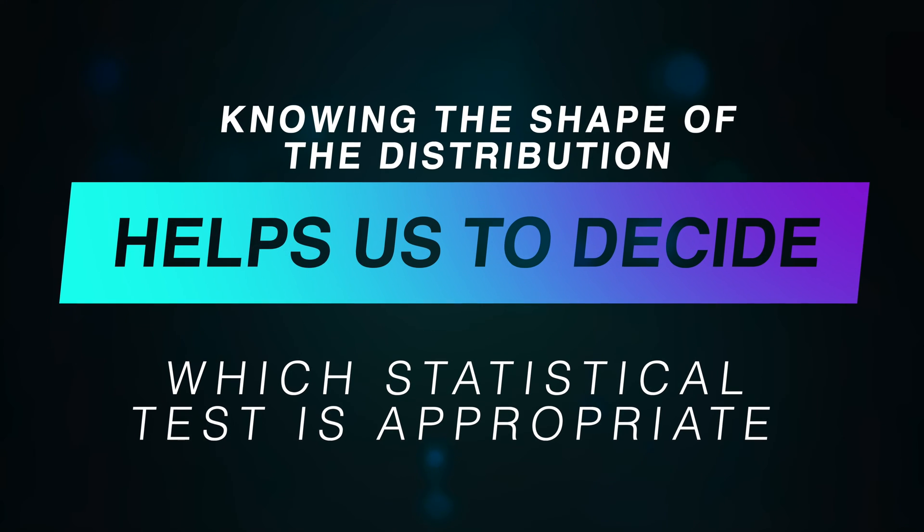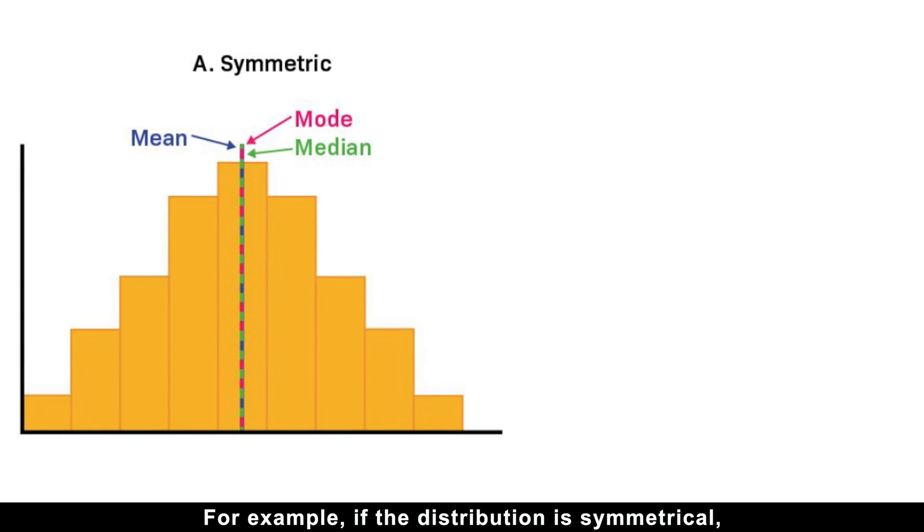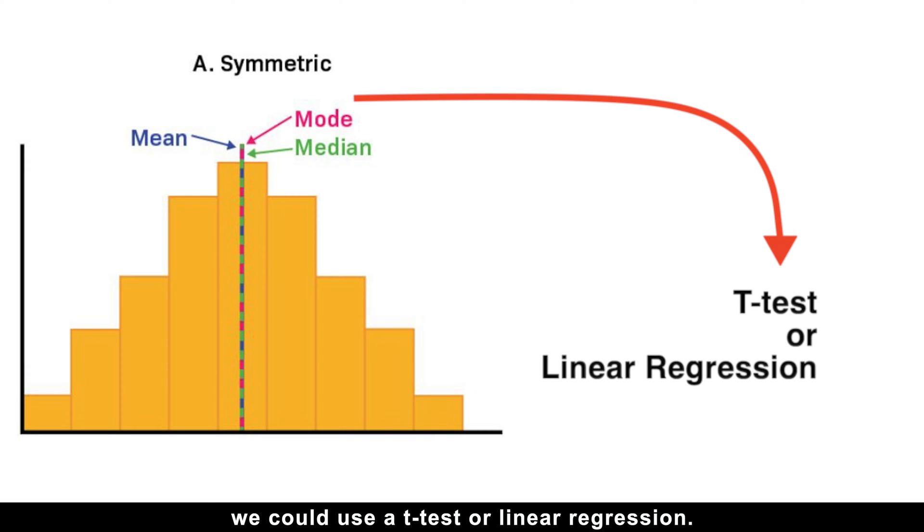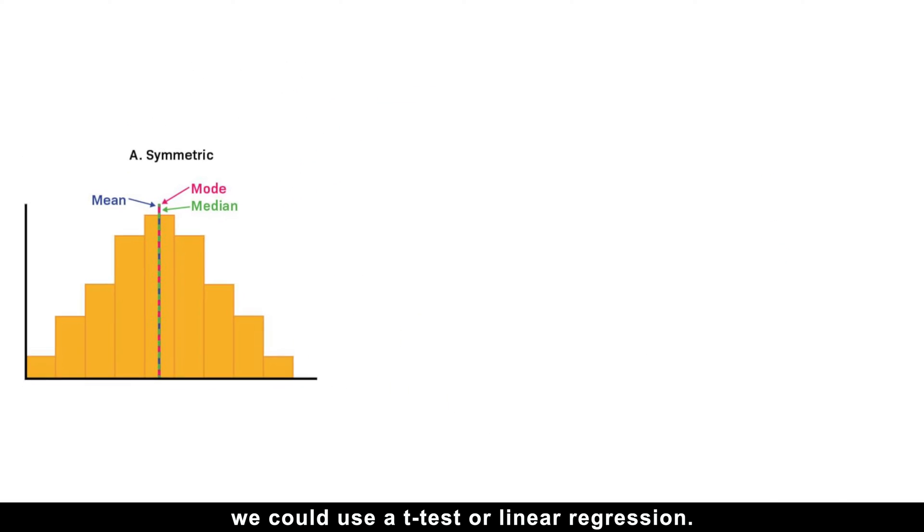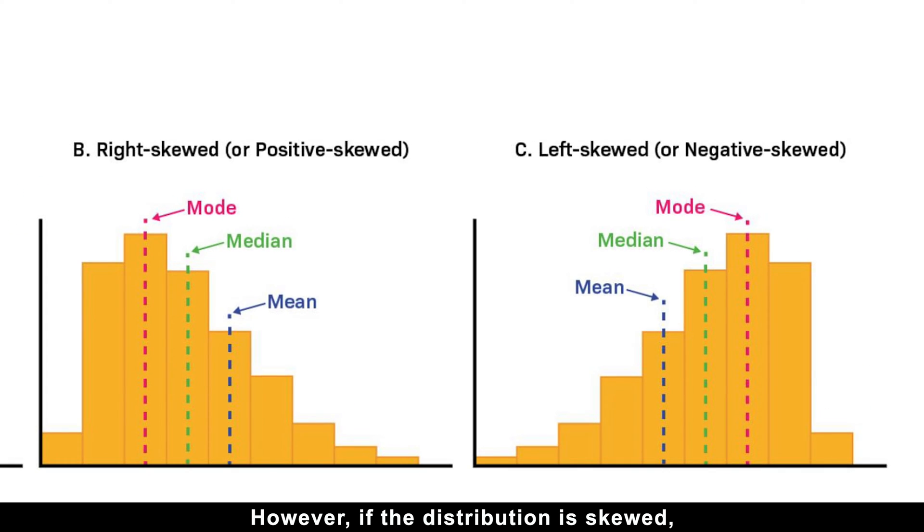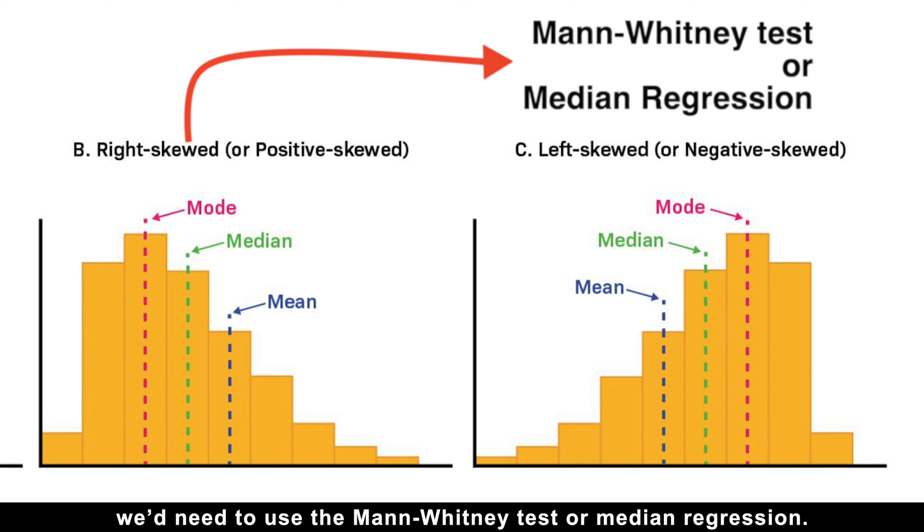Knowing the shape of the distribution helps us decide which statistical test is appropriate. For example, if the distribution is symmetrical, we could use a t-test or linear regression. However, if the distribution is skewed, we'd need to use the Mann-Whitney test or median regression.